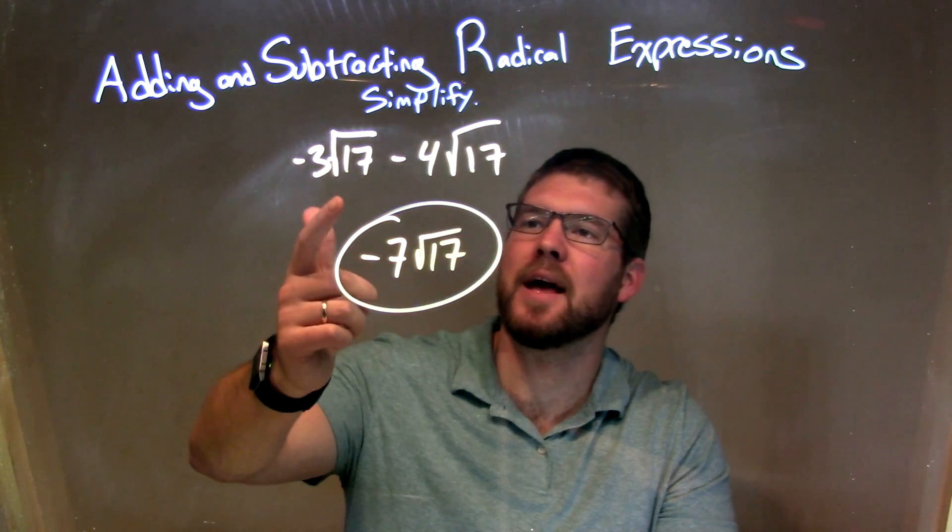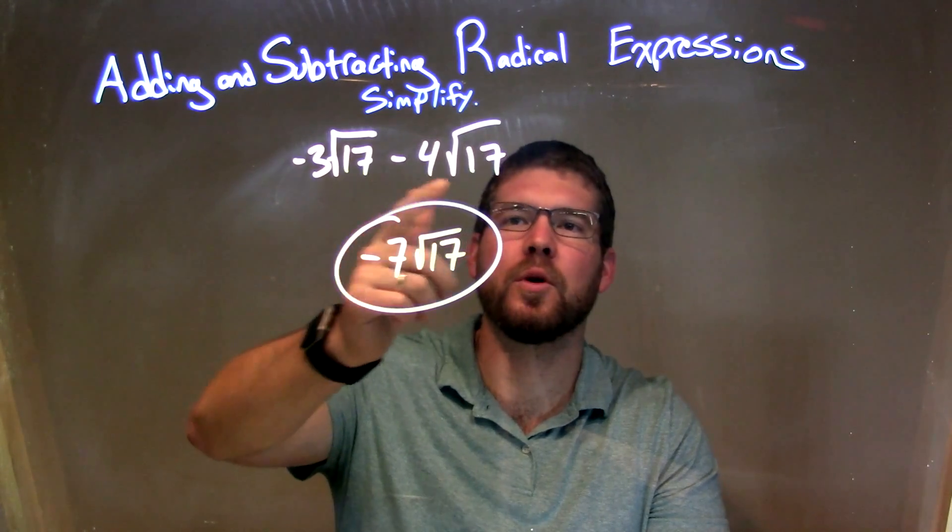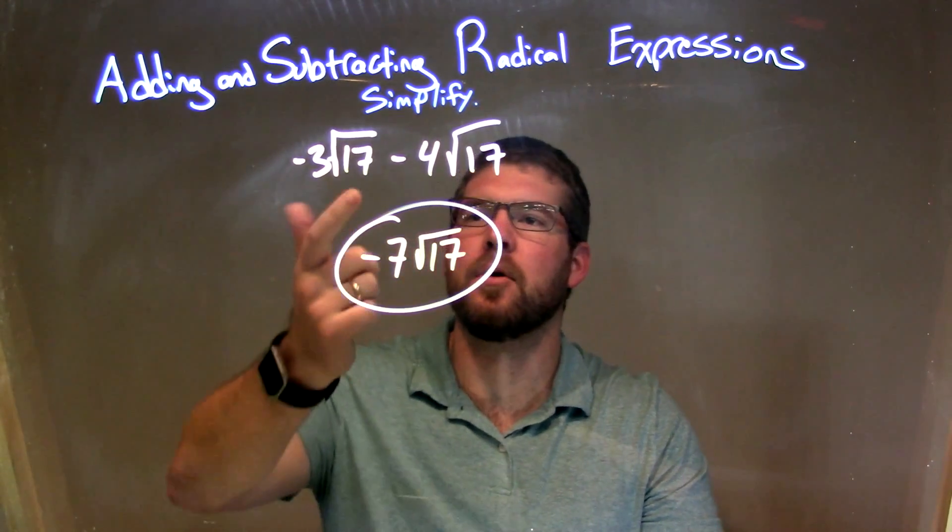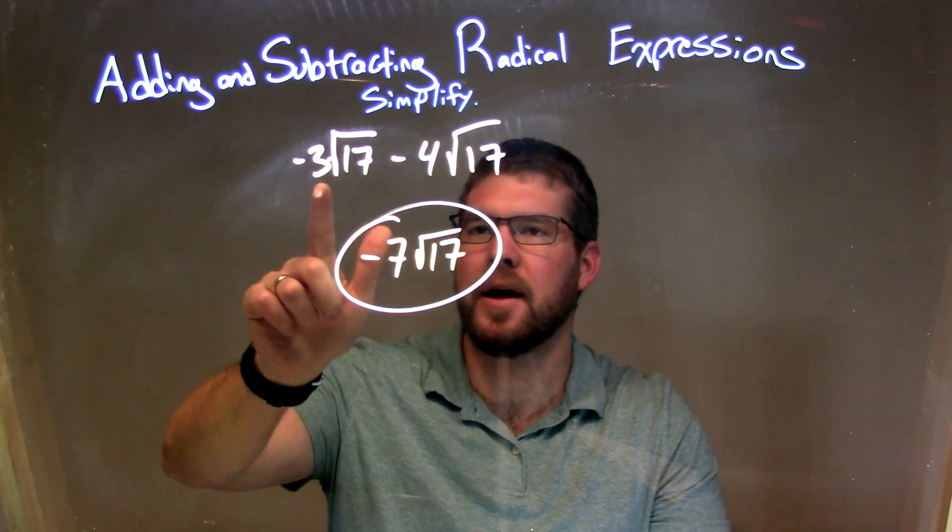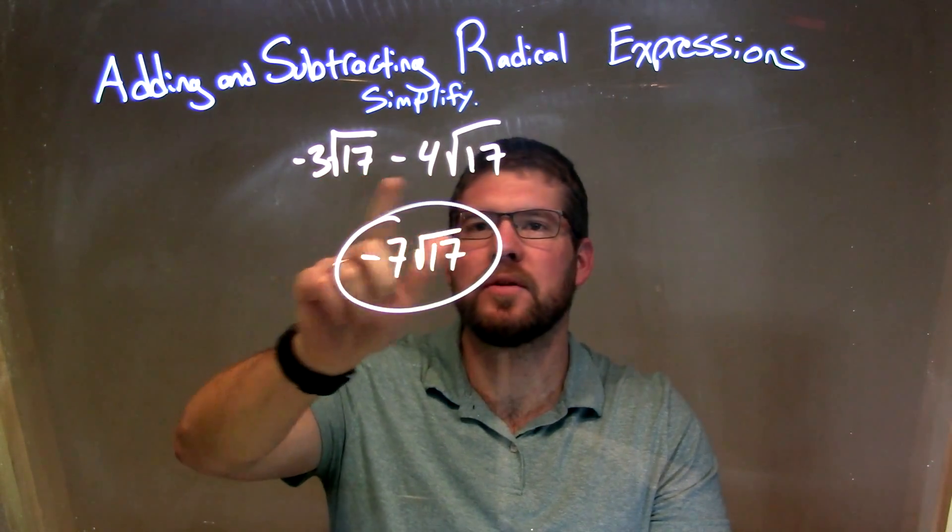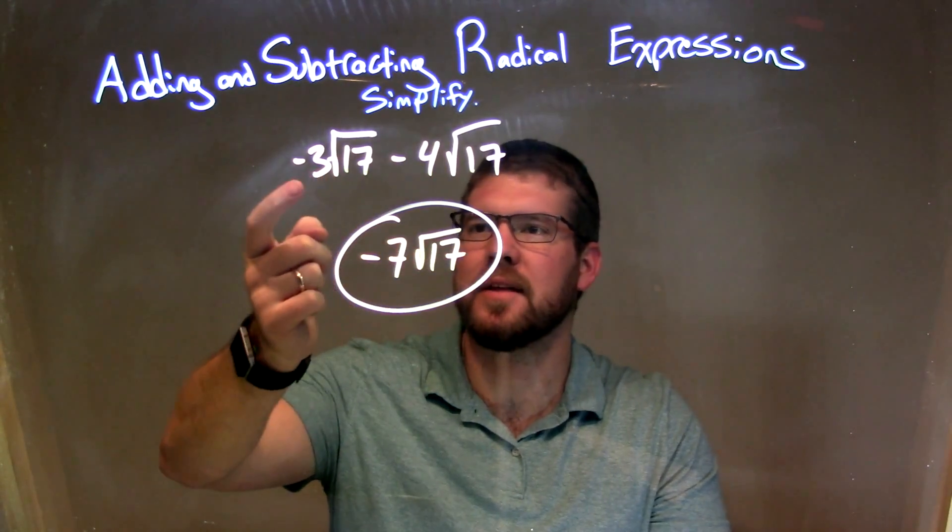So let's recap. We're given negative 3 times the square root of 17, minus 4 times the square root of 17. Well, since they both have the square root of 17 being multiplied by a number, we don't really have to worry about that square root of 17,